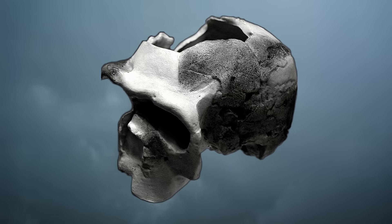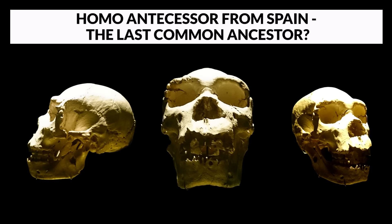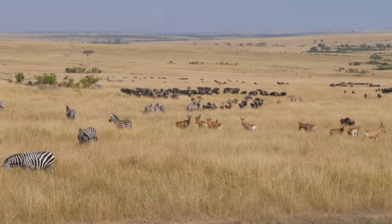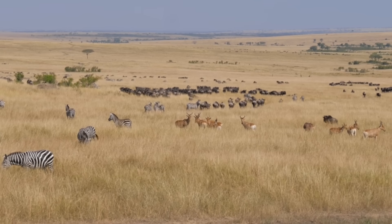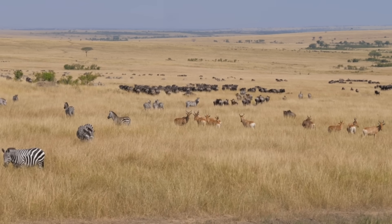New genetic data adds further complexity to reconstructing the nature and dating of the last common ancestor of Neanderthals and modern humans, according to a paper by Chris Stringer of the British Museum. Mitochondrial DNA indicates that the last common ancestor lived around 400,000 years ago, consistent with a Heidelbergensis origin. Yet the clear Neanderthal morphological and genetic affinities of the Spanish fossils, now dated to at least 400,000 years ago, indicate that an evolutionary divergence occurred much earlier.